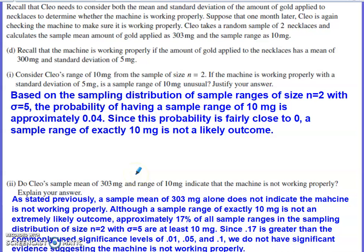And then the last part of this, she's again trying to check to see if the machine's working properly. So she takes two necklaces, calculates the sample mean of gold as 303, and her sample range is actually 10. Machine's working properly if we have 300 milligrams of gold being applied and a standard deviation of 5 milligrams. We want to consider Clio's range of 10 from the sample size of 2. If the machine is working properly, is a sample range of 10 unusual? Justify your answer. So I went back to that first graph, and I tried to work across here, and I saw that 10 would be associated with this bar right here.